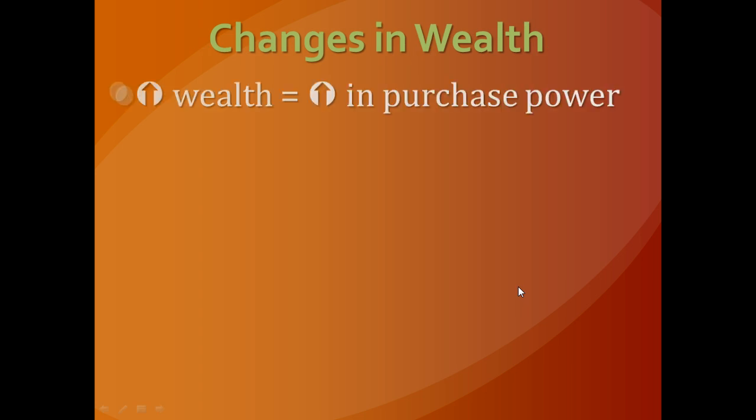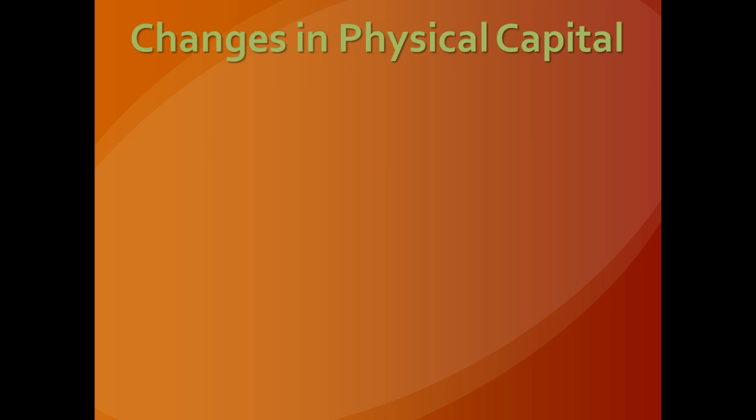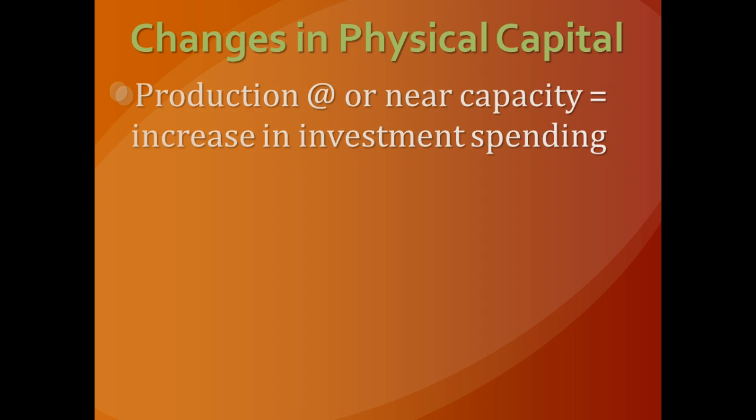Changes in wealth have an effect as well — an increase in wealth increases purchasing power, and we'd see a right shift in aggregate demand. If wealth were to diminish, we'd see the opposite. Changes in physical capital also play an important role: if we're producing at or near capacity, we need to invest in new production equipment, which increases investment spending regardless of the price level. That increase in I causes a shift to the right in aggregate demand.